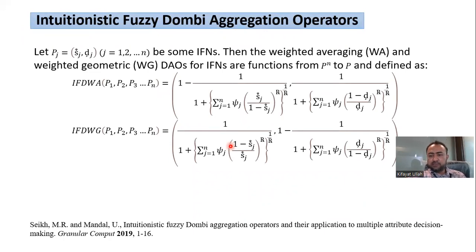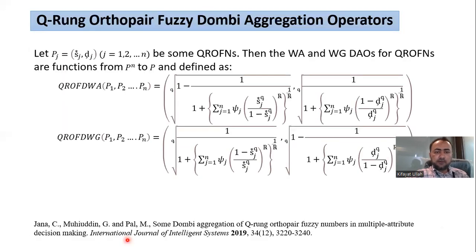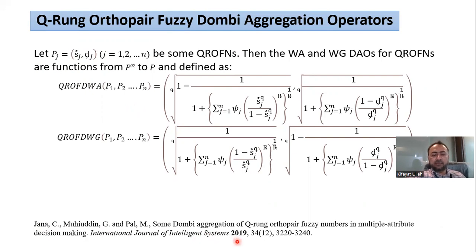Now we'll discuss the aims and objectives, looking at some previously defined Dombi aggregation operators. The first is intuitionistic fuzzy Dombi aggregation operators — for any finite number of intuitionistic fuzzy numbers Pj, the weighted averaging and weighted geometric Dombi aggregation operators are defined by the first and second expressions respectively, proposed by Sheikh and Mandel back in 2019. Dombi aggregation operators were also developed for Q-rung orthopair fuzzy numbers, proposed by Janna et al. back in 2019, providing more flexibility to decision-makers than the other two frameworks.